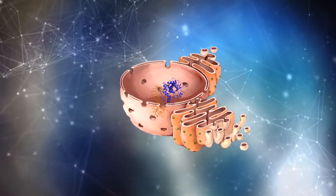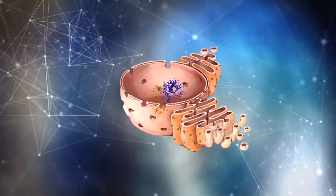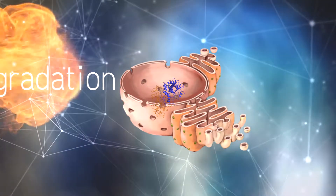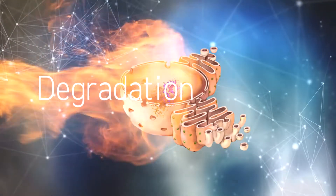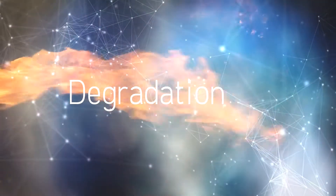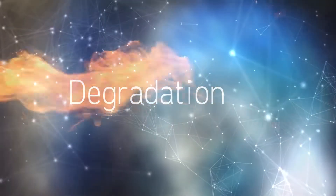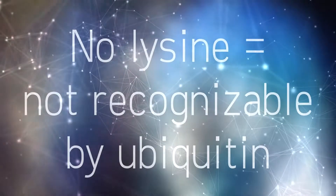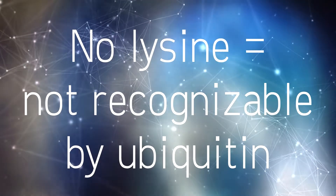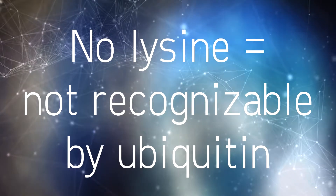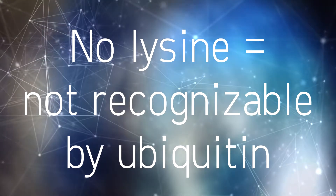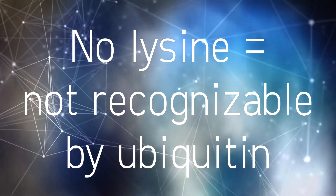In order for ricin to enter the cytosol, it utilizes the endoplasmic reticulum-associated degradation pathway, while also avoiding degradation by proteasomes, which is thought to be a direct result of the low presence of lysines within ricin's structure, lysines being a recognizable factor by ubiquitin.